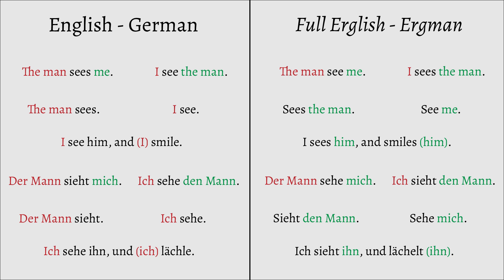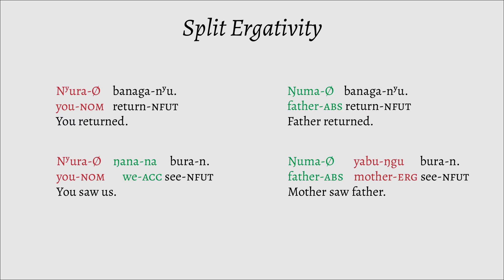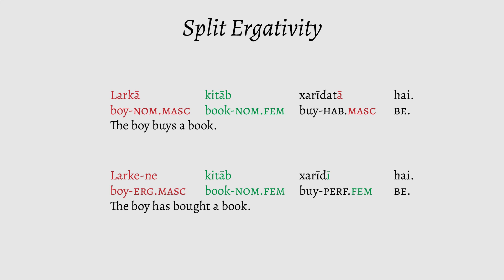Most languages have something known as split ergativity, where ergativity will only appear under certain circumstances. Many languages make a split between pronouns and regular nouns, where pronouns may be accusative and nouns ergative, or vice versa. The split could also be along tense — take Hindi, for example. It could also be lexically motivated, where only certain words can be ergative, like in English.